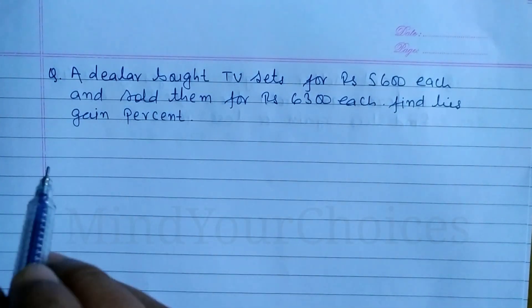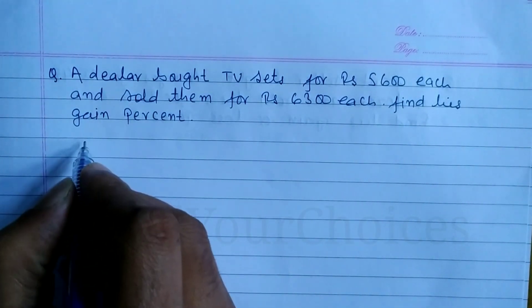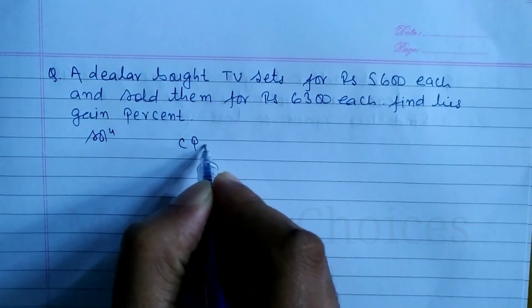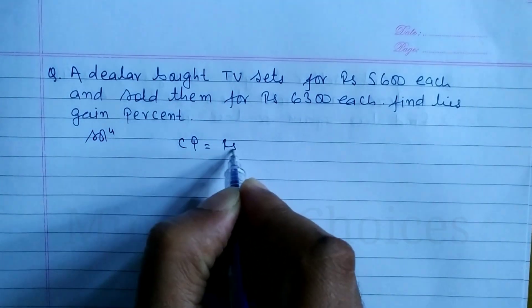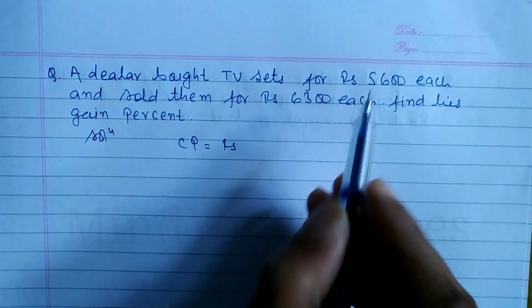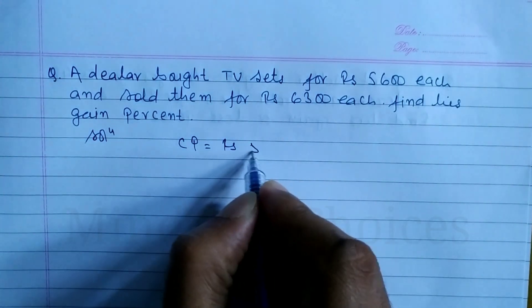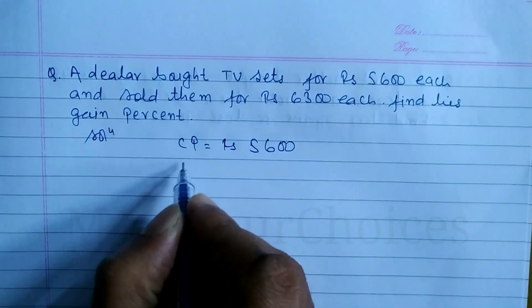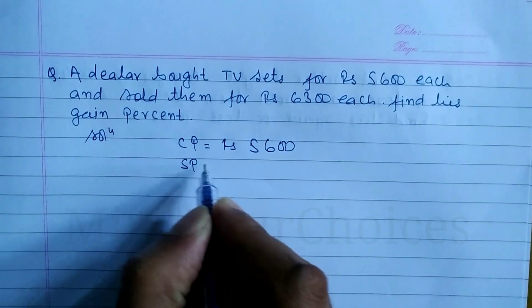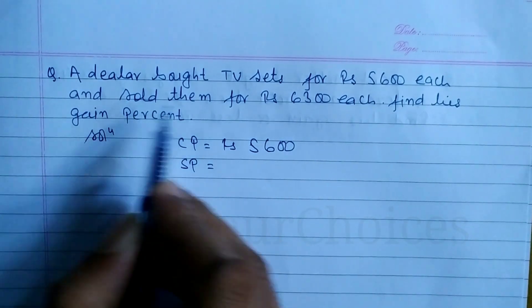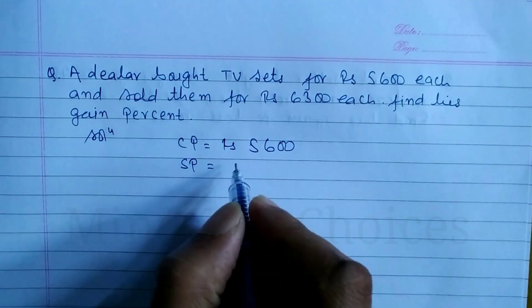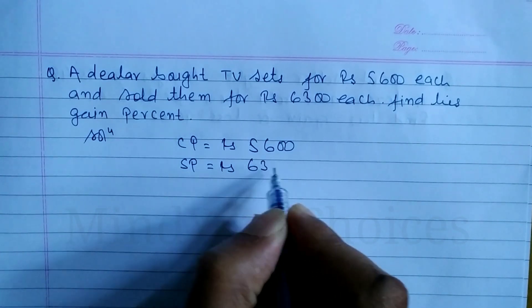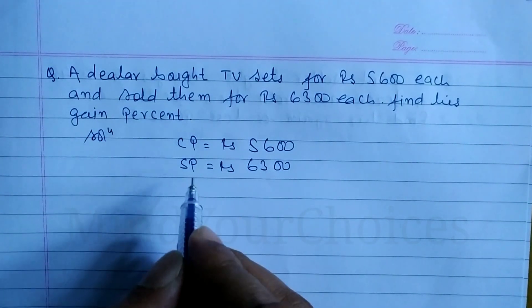Here we have to find out profit percent. Let's start. CP, that is cost price, is equal to 5,600. Selling price, SP of TV set, is equal to 6,300.